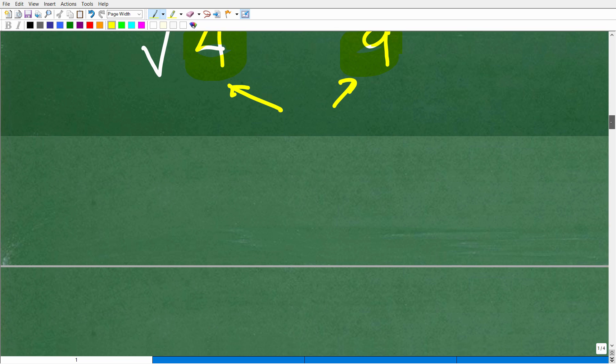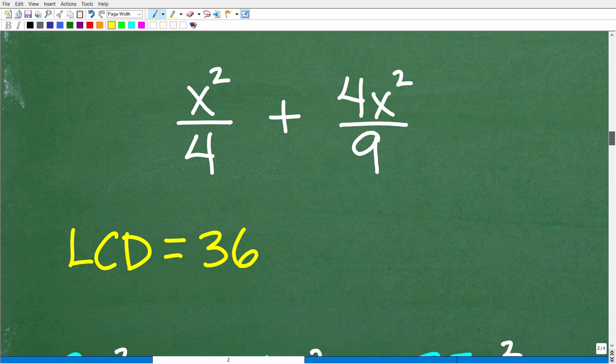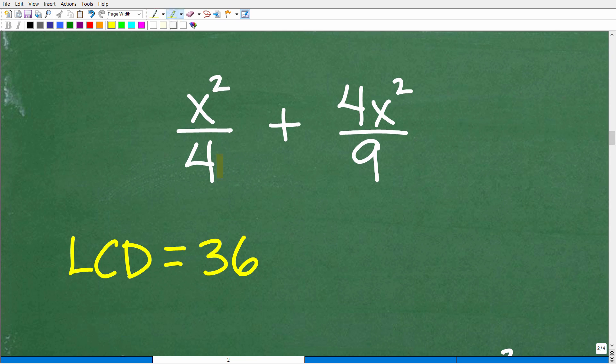You can't add or subtract fractions unless the denominators are the same, i.e. they are the lowest common denominator. So we're going to have to find the LCD between 4 and 9. Hopefully you're like, hey, the LCD here is 36. And you would be correct.